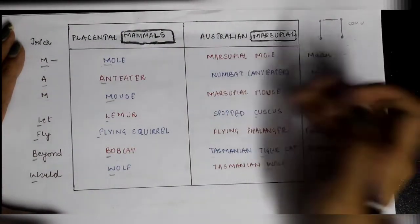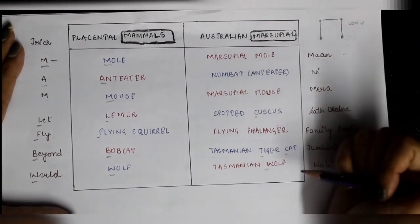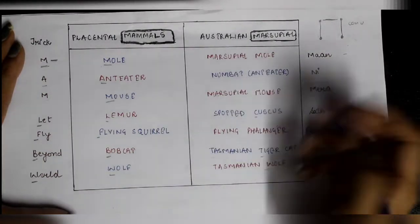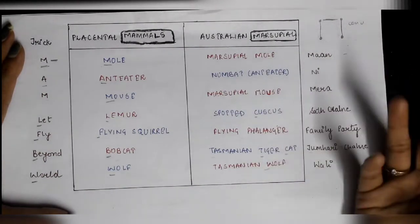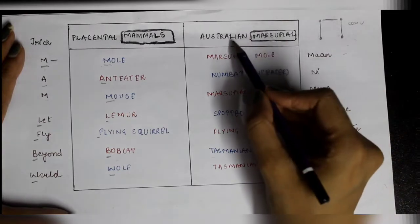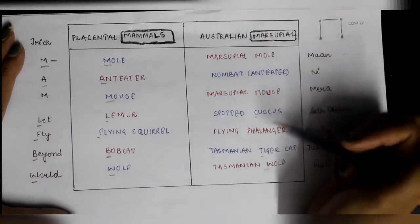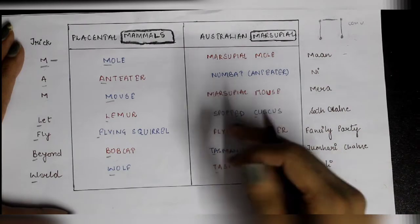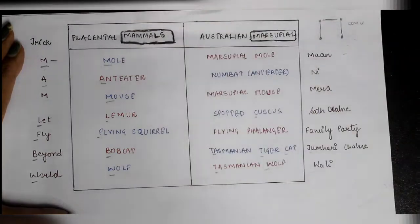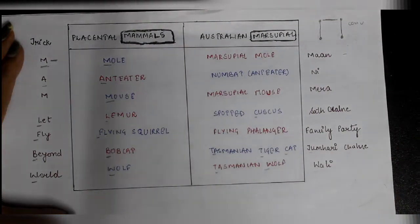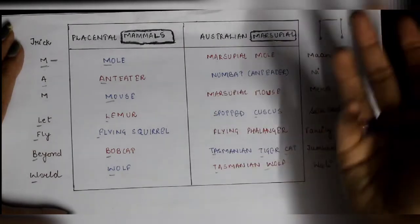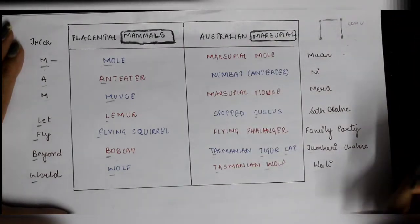Now for Australian marsupials — one thing is that in options, if the word 'marsupial' is given, you can easily tell that yes, it is an Australian marsupial. And if 'Tasmanian' is given in the option, both come under Australian marsupials. So for those you can easily identify them as Australian marsupials.